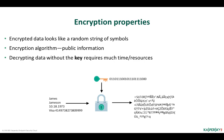It does not necessarily mean that companies actually make their encryption algorithms and standards public. However, even if this information becomes known, it will not considerably reduce data protection reliability. An algorithm must meet numerous requirements, introduced mainly to prevent text decryption using statistical analysis. For example, any modern algorithm must make encrypted text statistically similar to a random set of symbols. 'Impossible' in the encryption context means it requires lots of time or computational resources whose cost exceeds the cost of the encrypted information. The longer the key, the more time is necessary to break it.